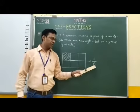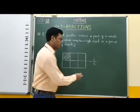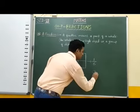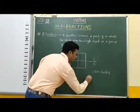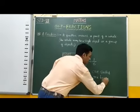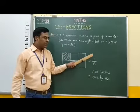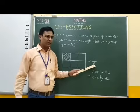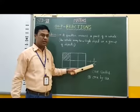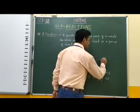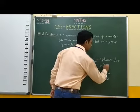This fraction is read as 1 by 6. In this fraction, the top number is called the numerator and the bottom number is called the denominator. Therefore in this fraction, 1 is the numerator and 6 is the denominator.